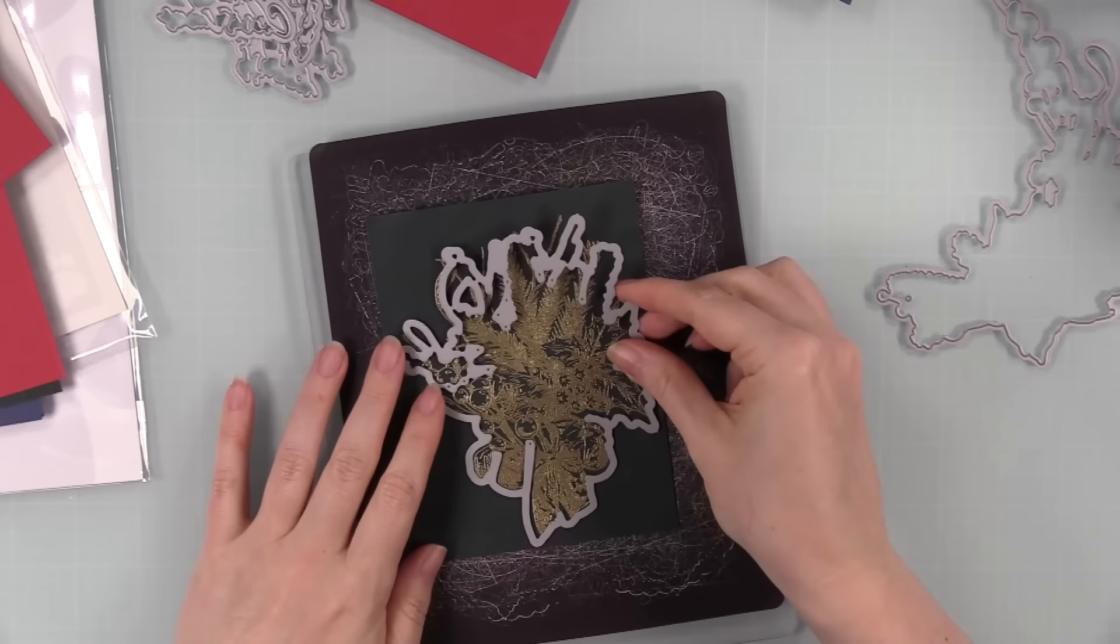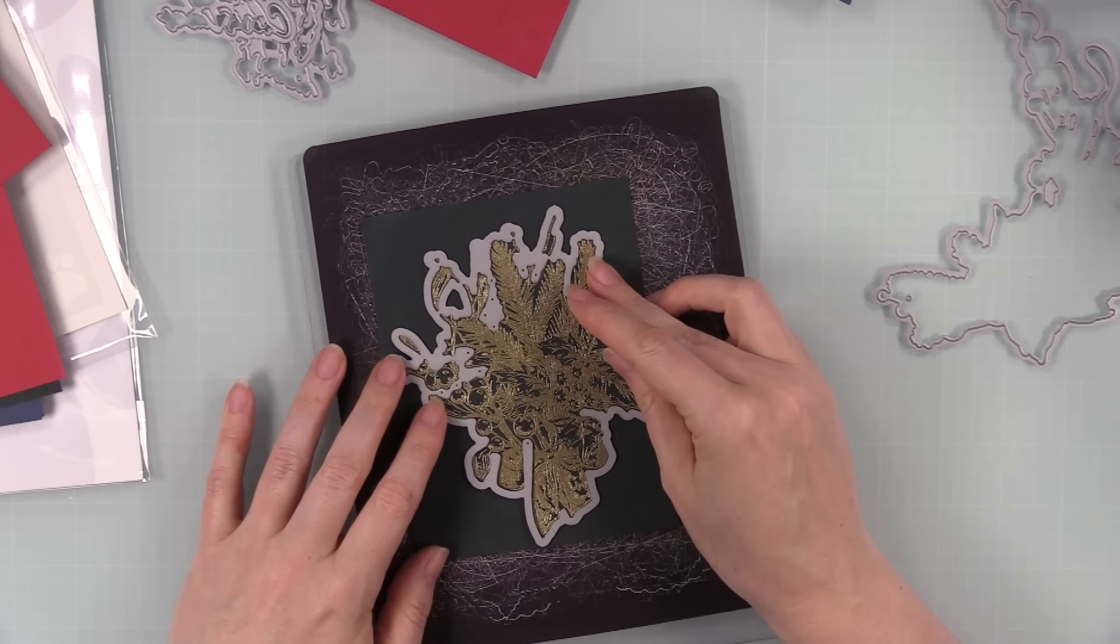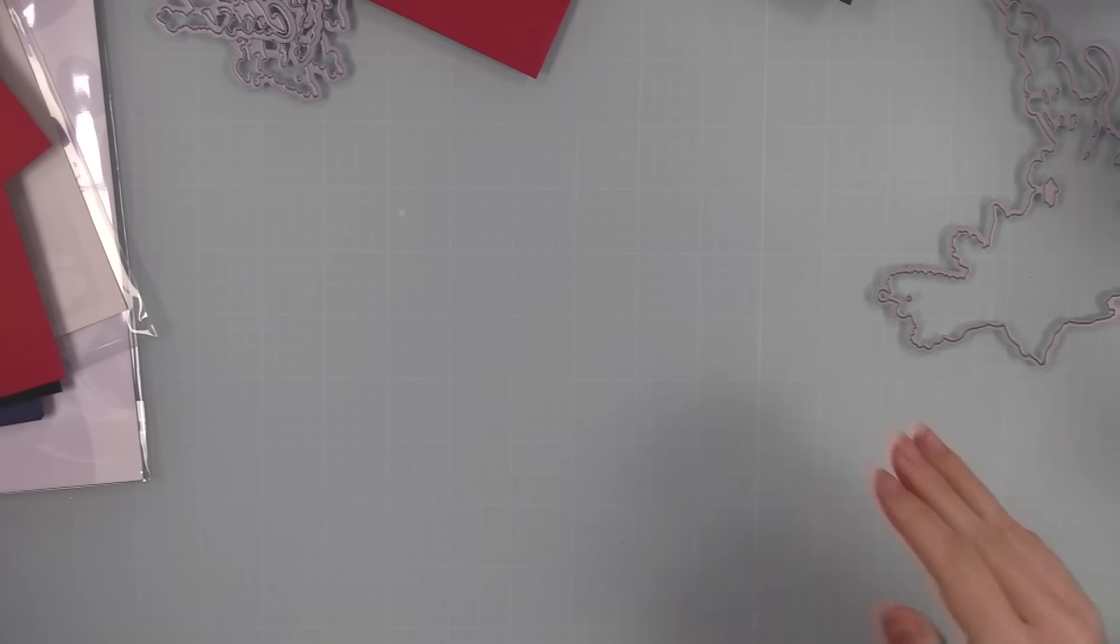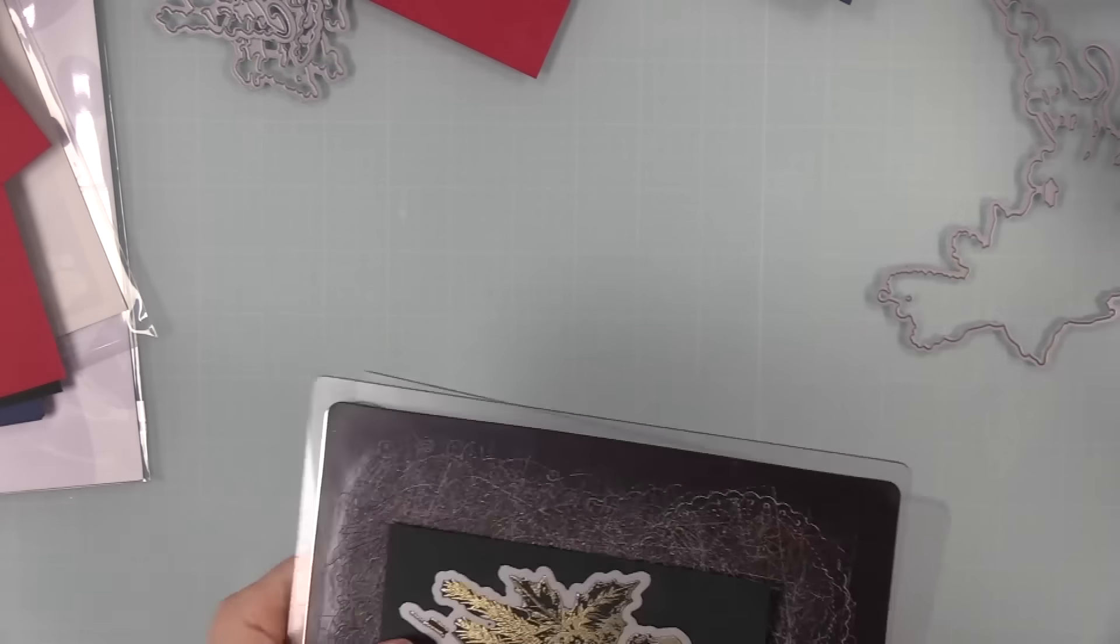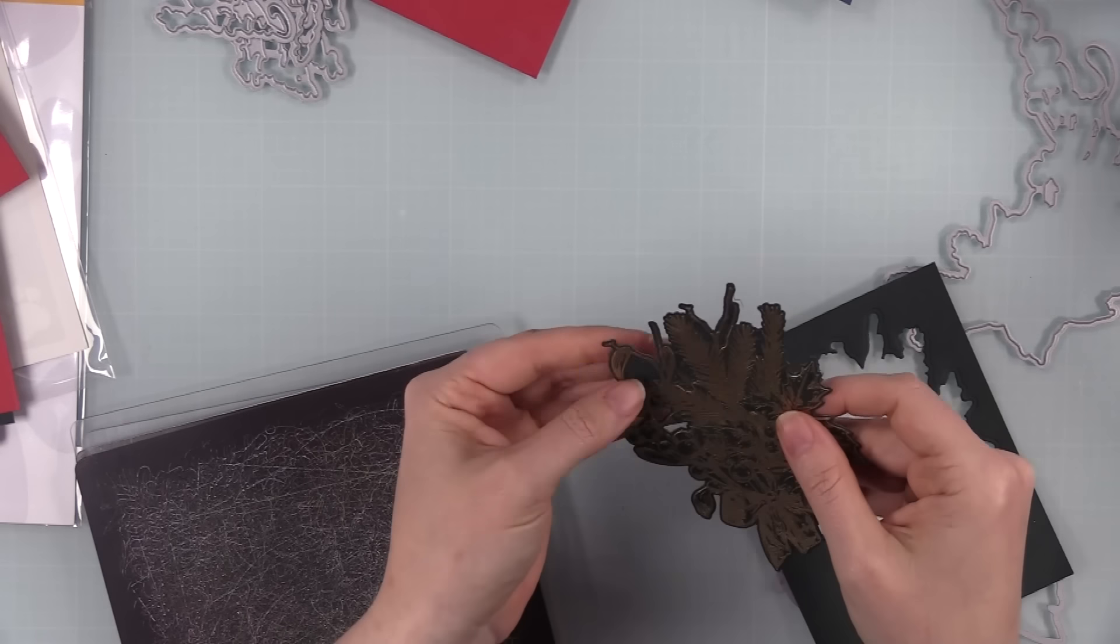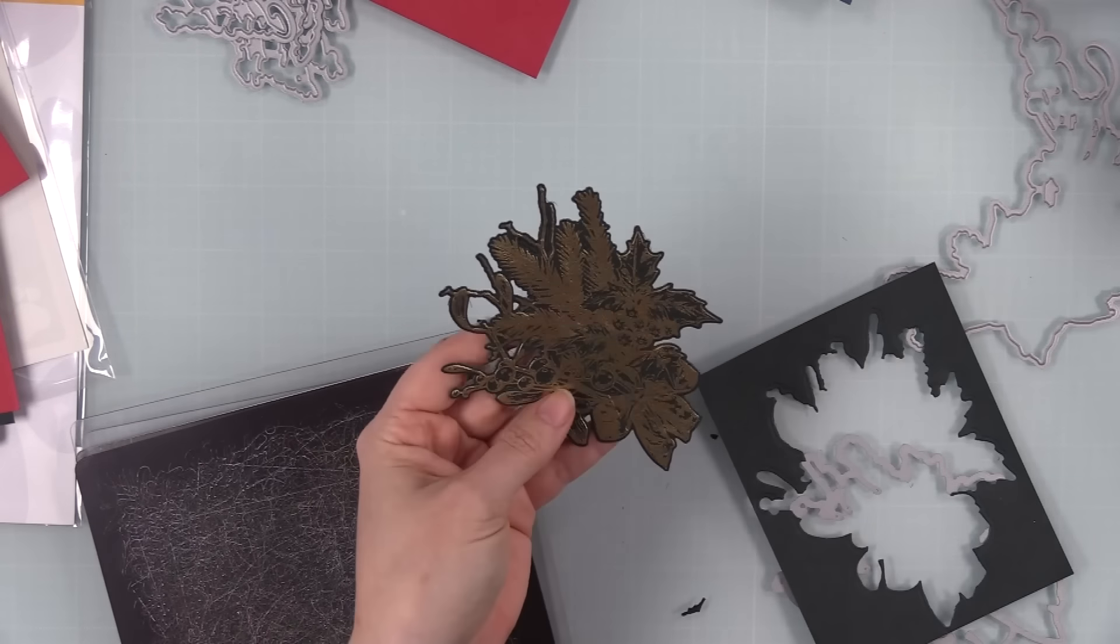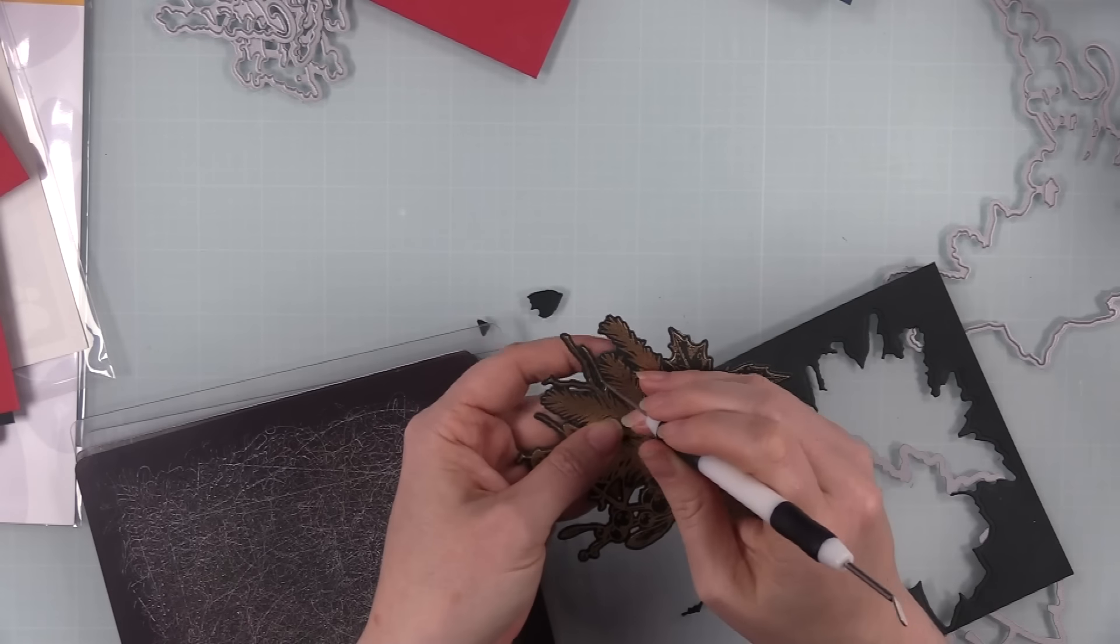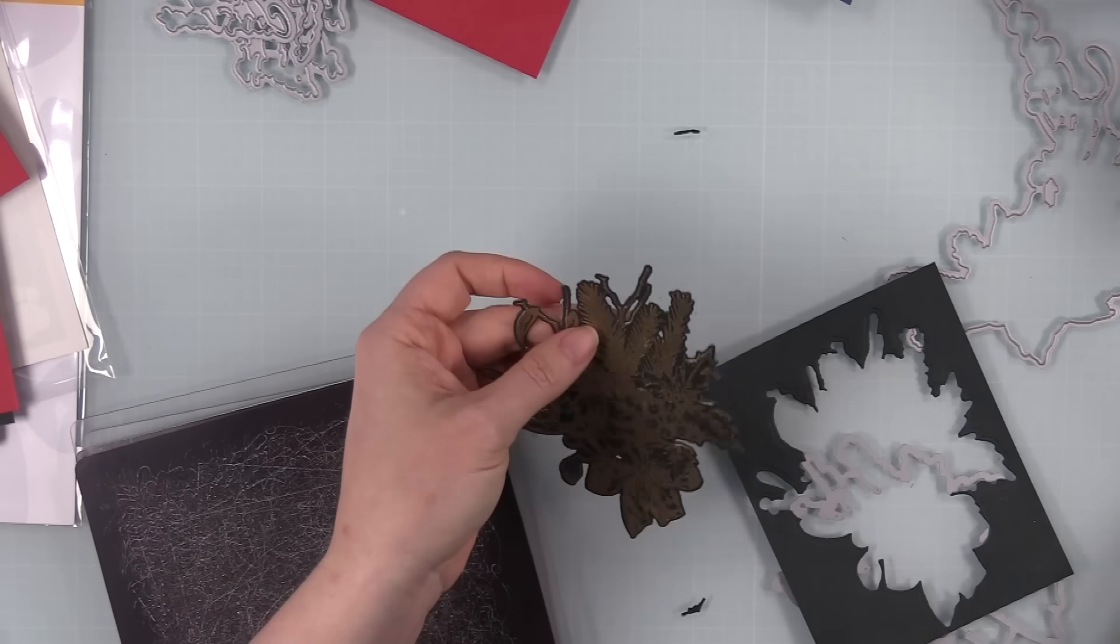There is a coordinating die set for this stamp set. It is a large die set, they are large images. I do like that it cuts out all around plus it cuts out some of the center bits. So I die cut all of these finished images with the coordinating wafer die and then popped out all the little bits and pieces.